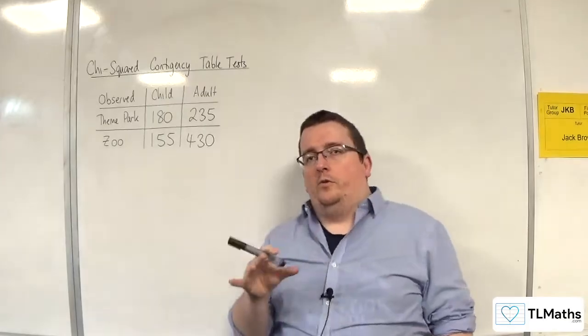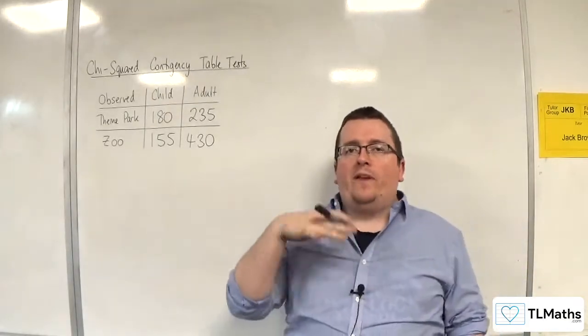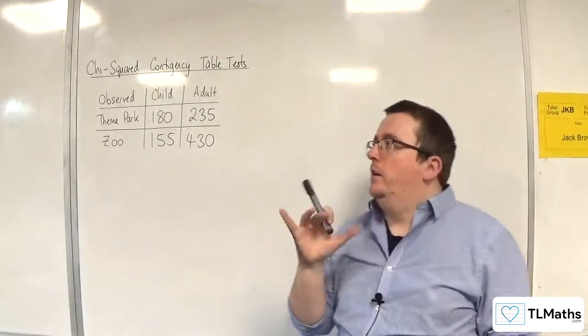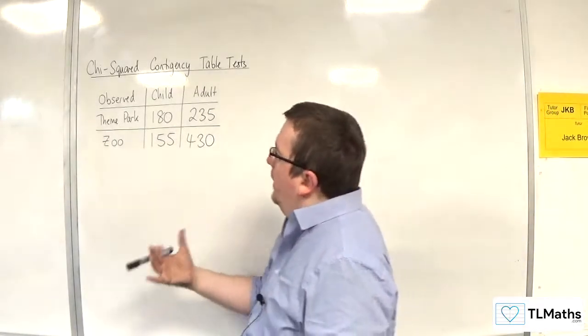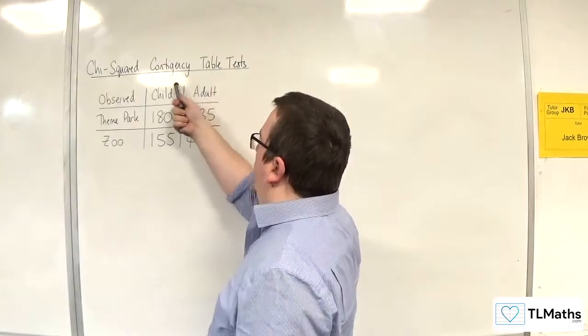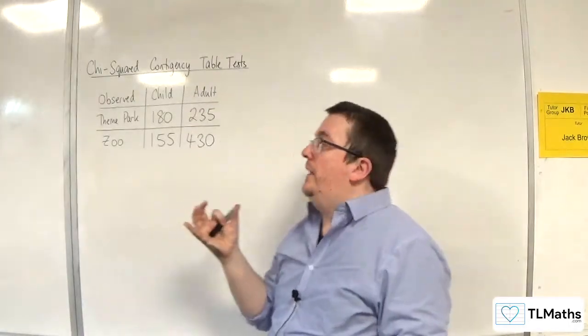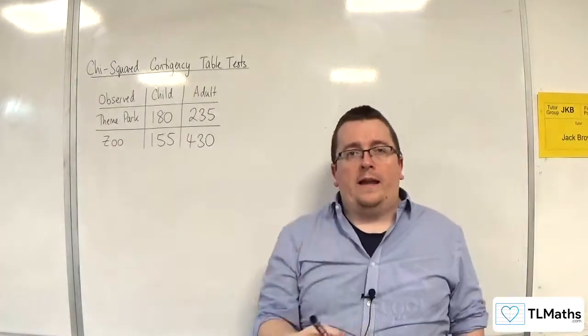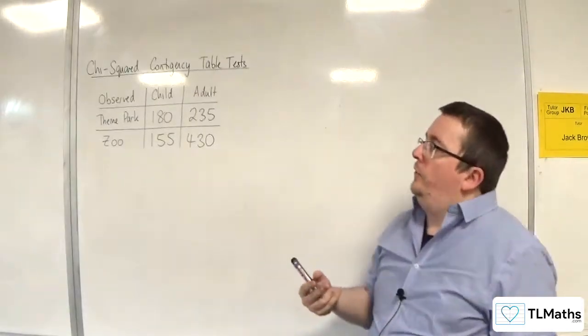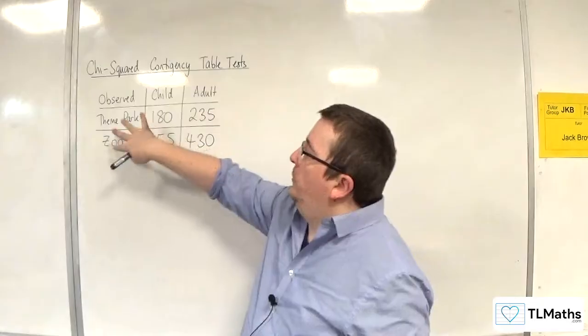So what we're going to try and do is determine whether there is any link between these two variables that we have, which are in this case the type of ticket, so child and adult tickets, and we've got two attractions, the theme park and the zoo. So these are the two variables.